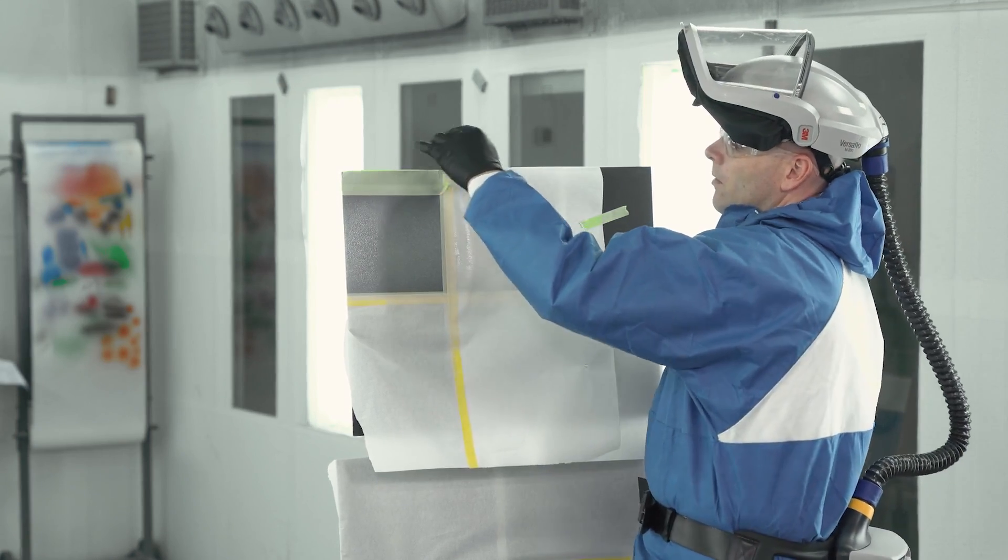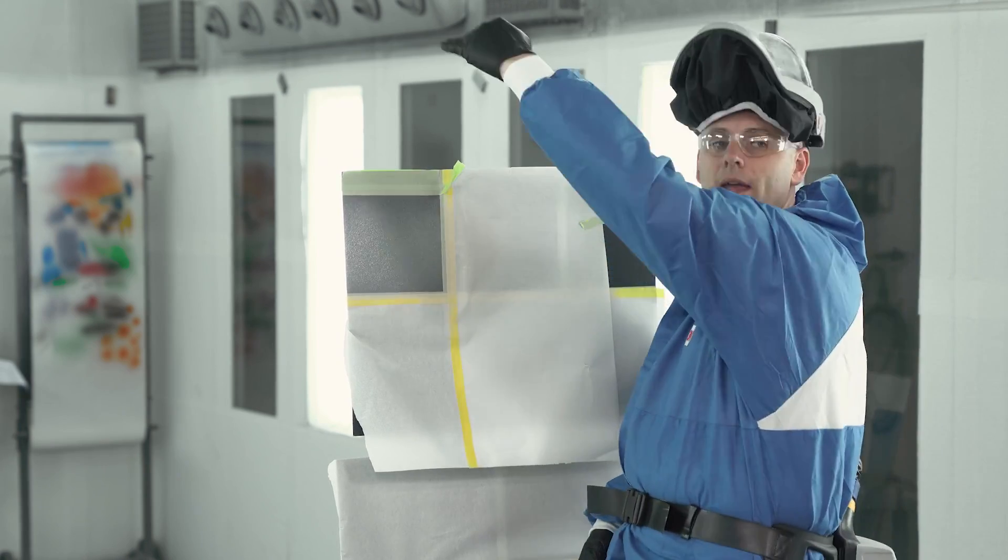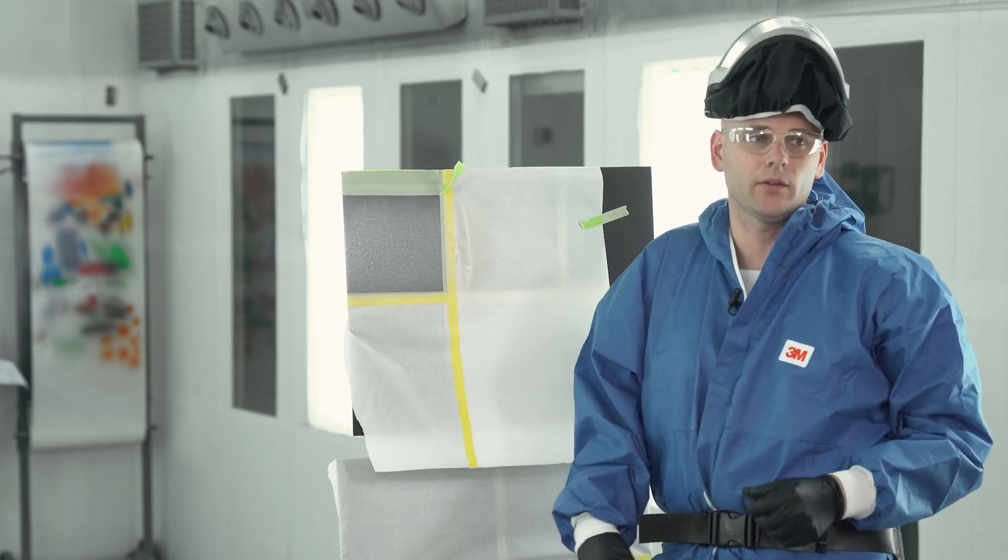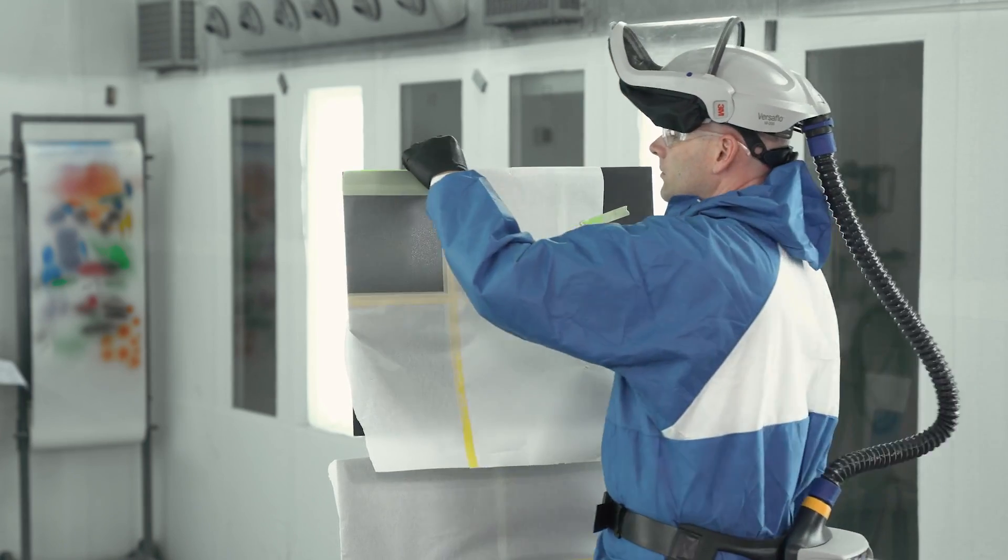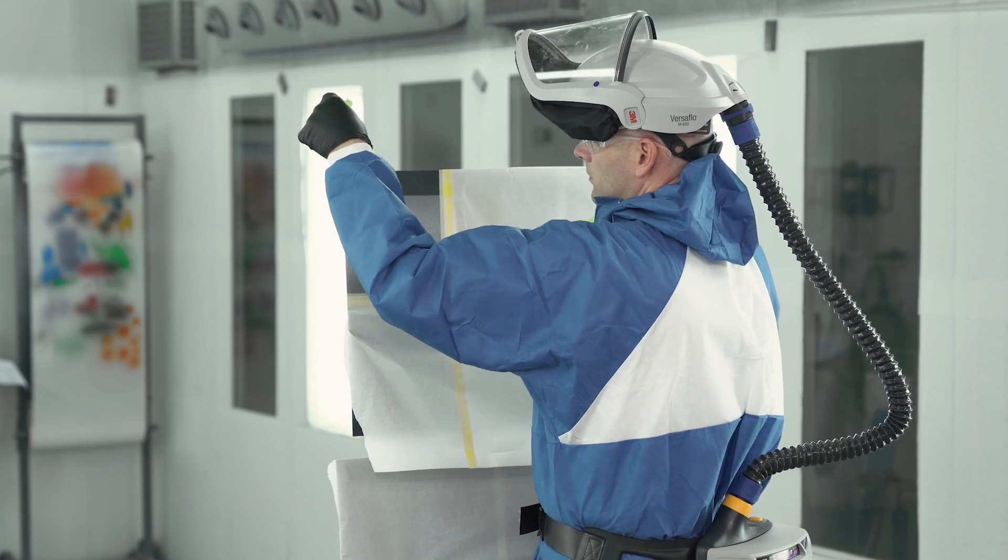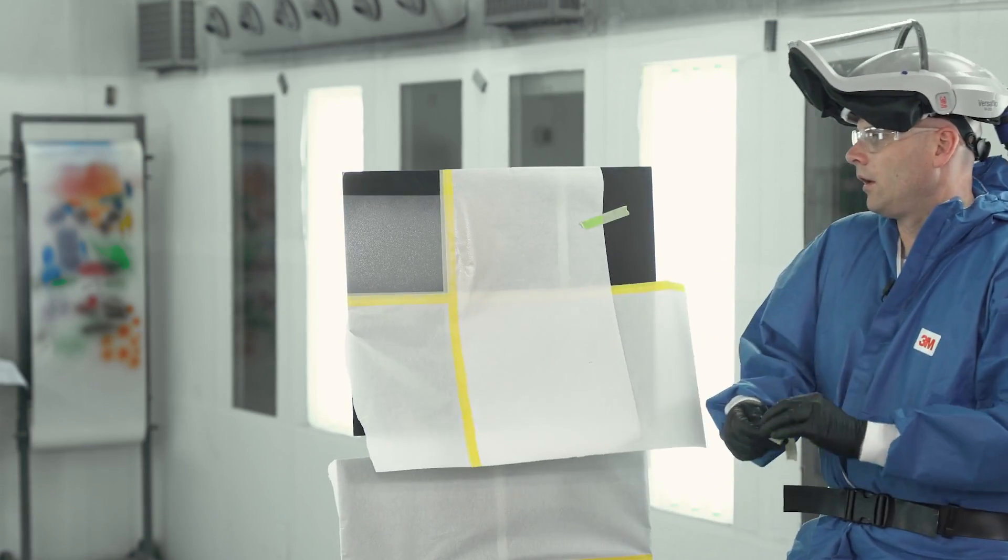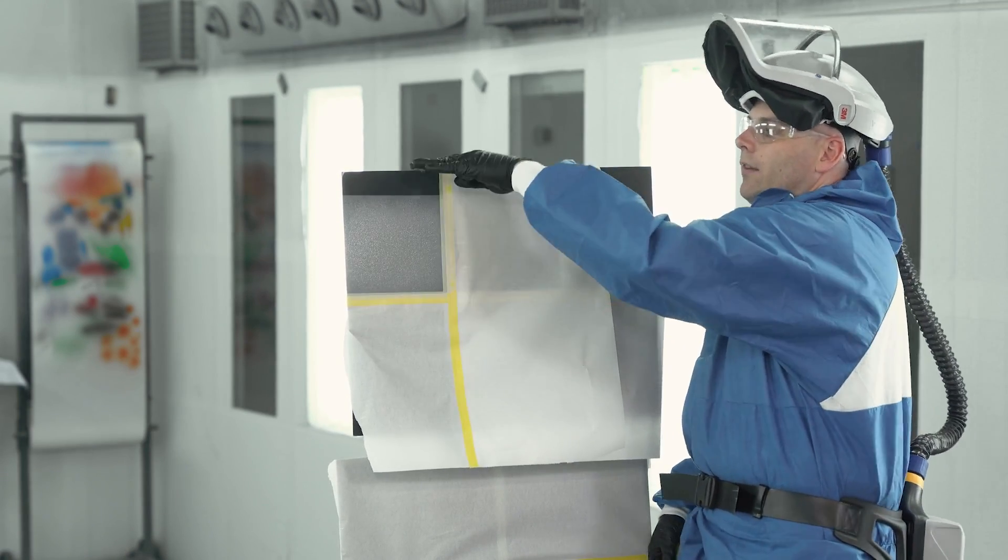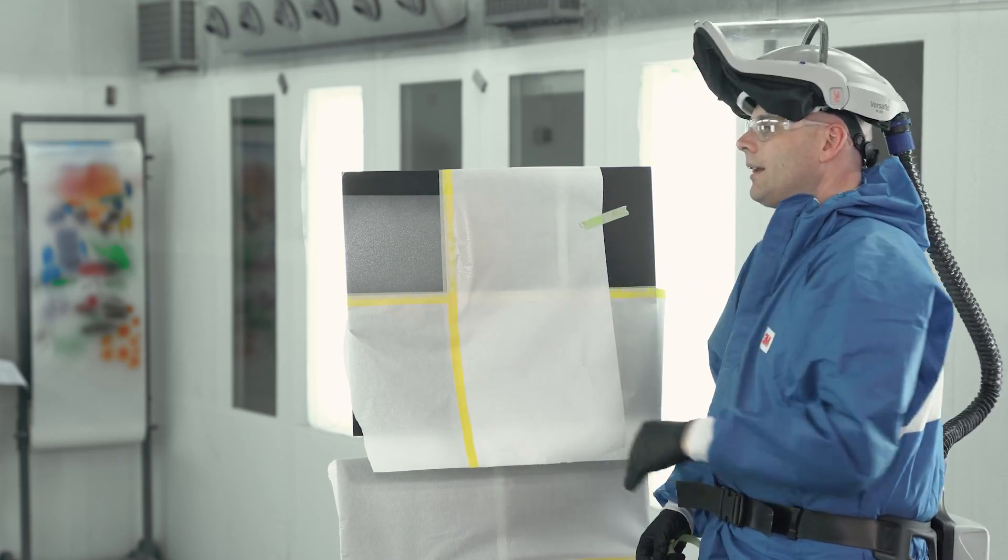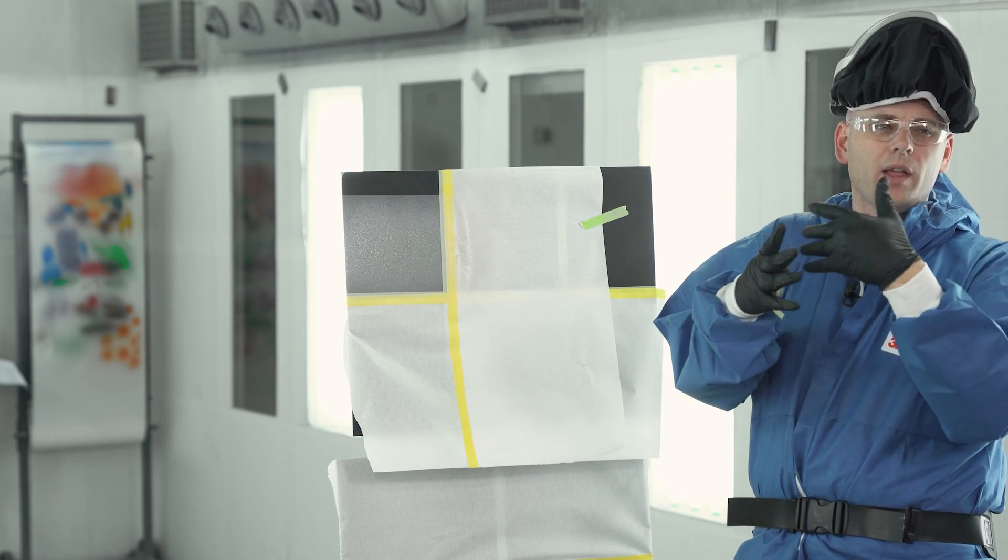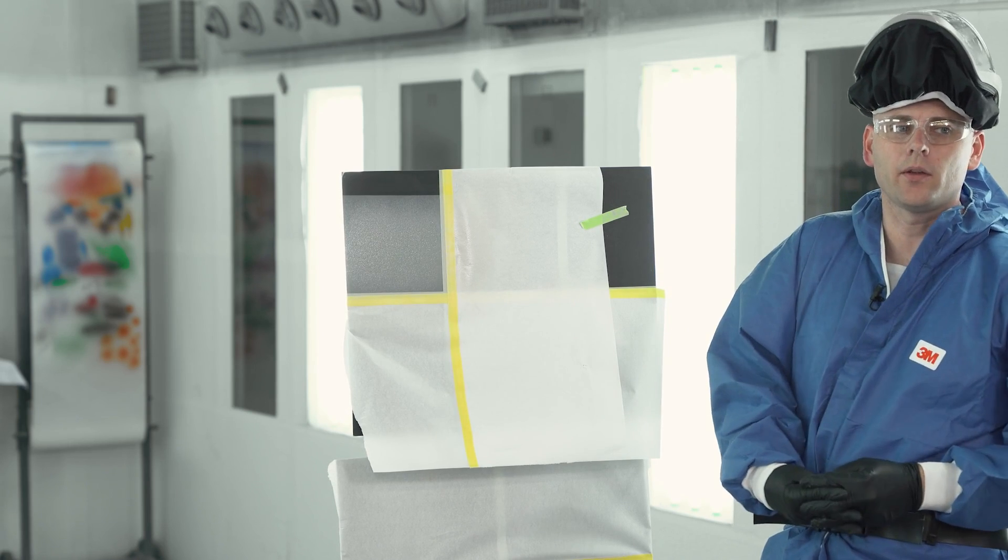When we're peeling our masking, we want to make sure we're always peeling away from the area that we just sprayed. That'll give us the nice, cleanest transition line. So now you can see that nice transition that's crisp and clean and straight from our texture coating to our actual OEM surface that's going to be on the rest of the vehicle.